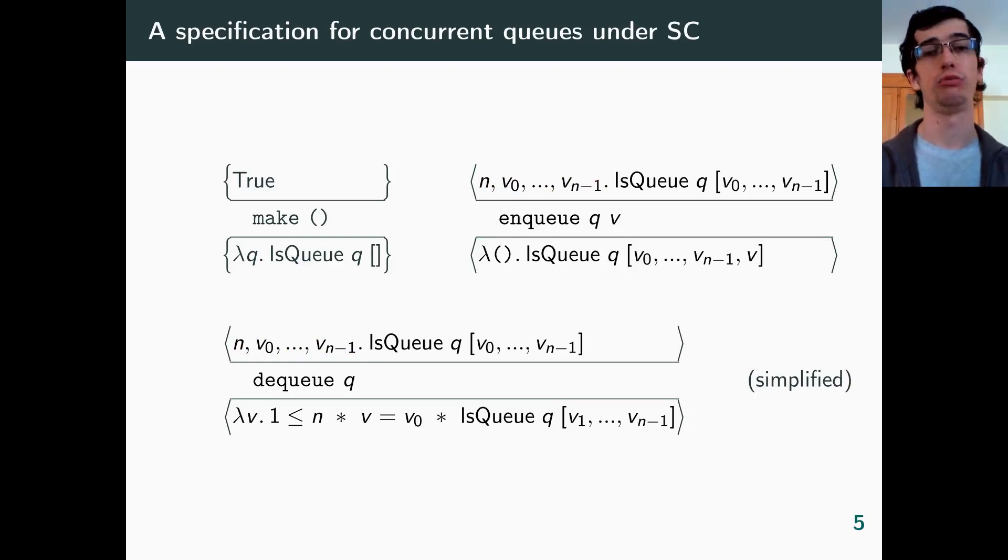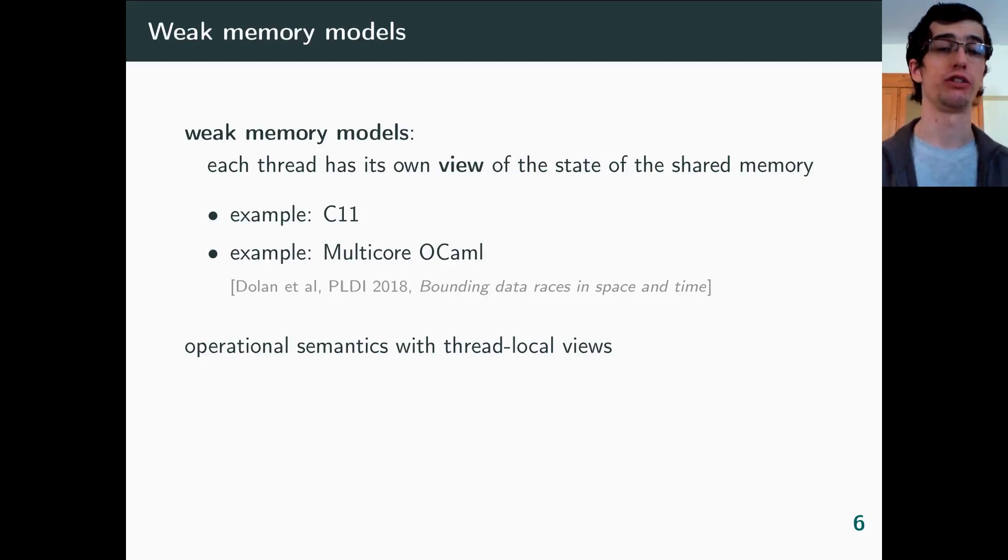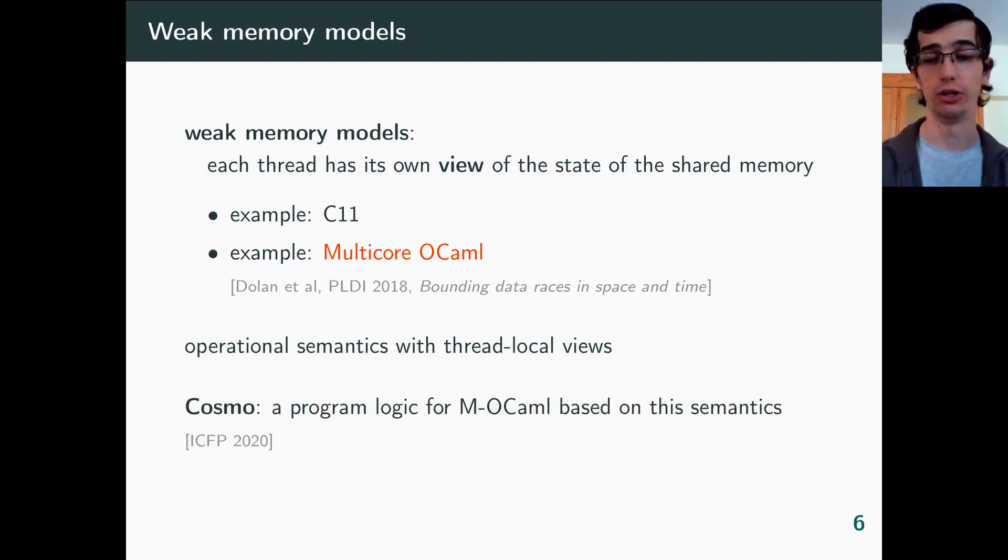So we now have a usable spec for a concurrent queue, but that was under sequential consistency. Sequential consistency is an unrealistic assumption in the modern world, so we have to embrace weaker models of memory. A well-known one is that of C11. And here, we are interested in that of Multicore OCaml. A way of describing such models is by saying that each thread has its own view of the shared state. For Multicore OCaml, this has been made formal by people at Cambridge in the references on the slide. And based on this, we have with COSMO our program logic for Multicore OCaml.